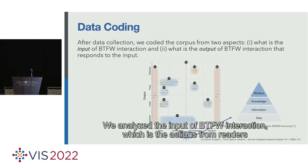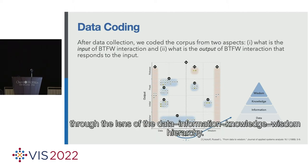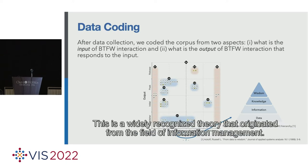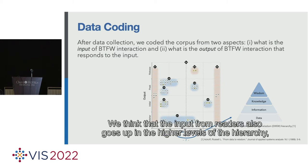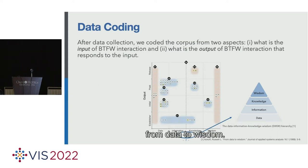First, what is the input of BTFW interaction? Second, what is the output of BTFW interaction that responds to the input? We analyzed the input of BTFW interaction, which is the actions from readers, through the lens of the data, information, knowledge, wisdom hierarchy. We think that the input from readers also goes up in the higher levels of the hierarchy, from data to wisdom.